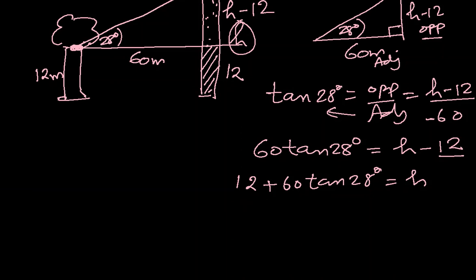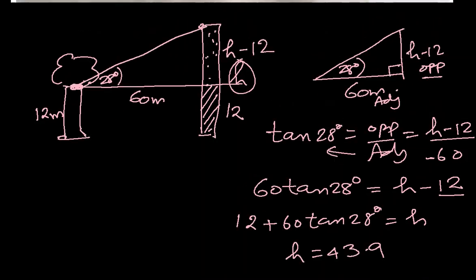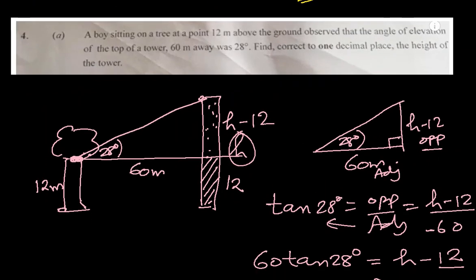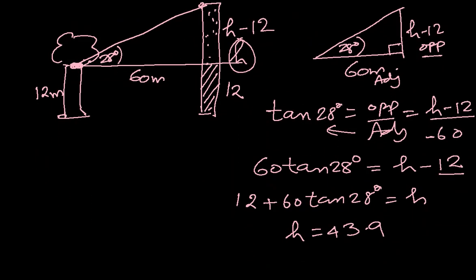Let me put this in the calculator. By the time I do that, you can do a very simple job — just hit that subscribe button and subscribe to this channel and I will make more videos like this for you. I got h equal to 43.9, and they are asking us to give the answer to one decimal place. So the answer is 43.9 meters.